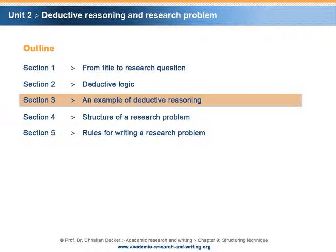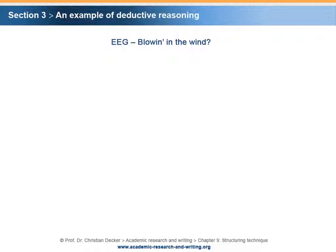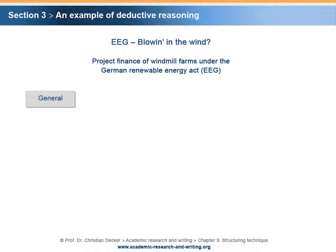Section 3 – An example of deductive reasoning. The following example of applying deductive reasoning is based on our sample research project. As seen before, the title of our research project is EEG – Blown in the Wind. Since this title needed a clarification of the topic, we have defined the topic as follows: Project Finance of Windmill Farms under the German Renewable Energy Act. Deductive reasoning implies that we work ourselves from more general information towards specific arguments and conclusions.